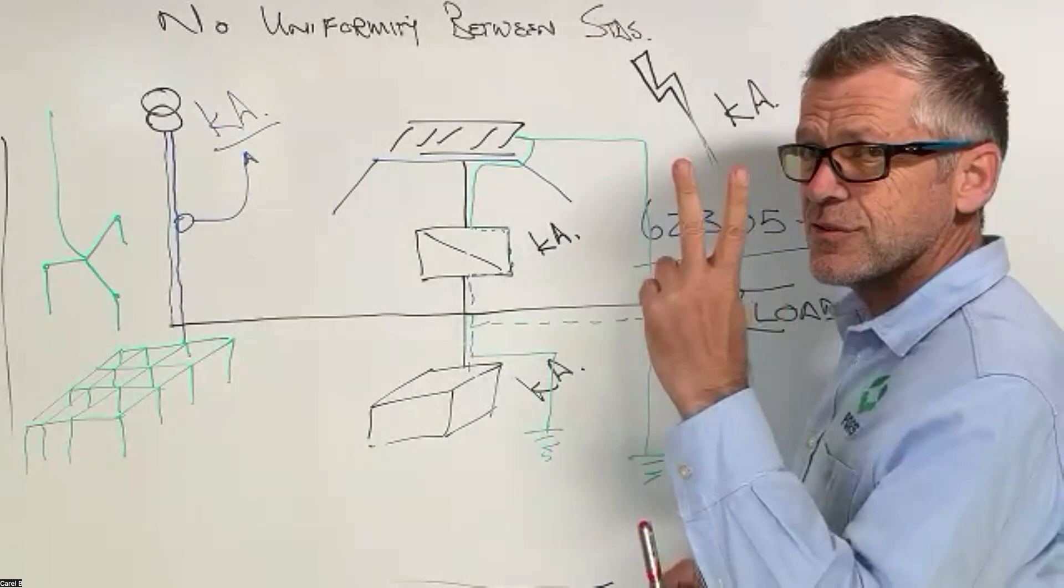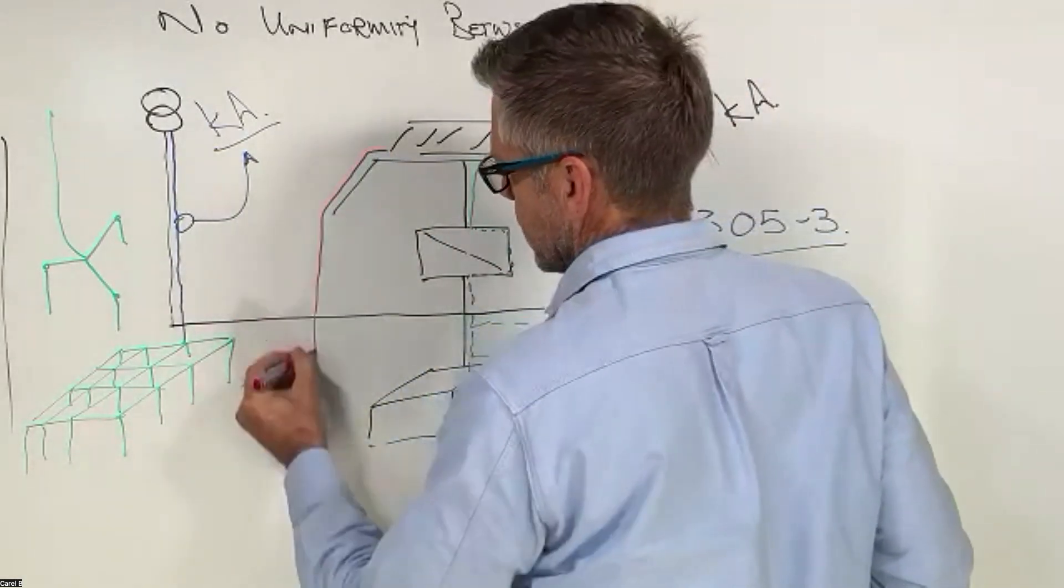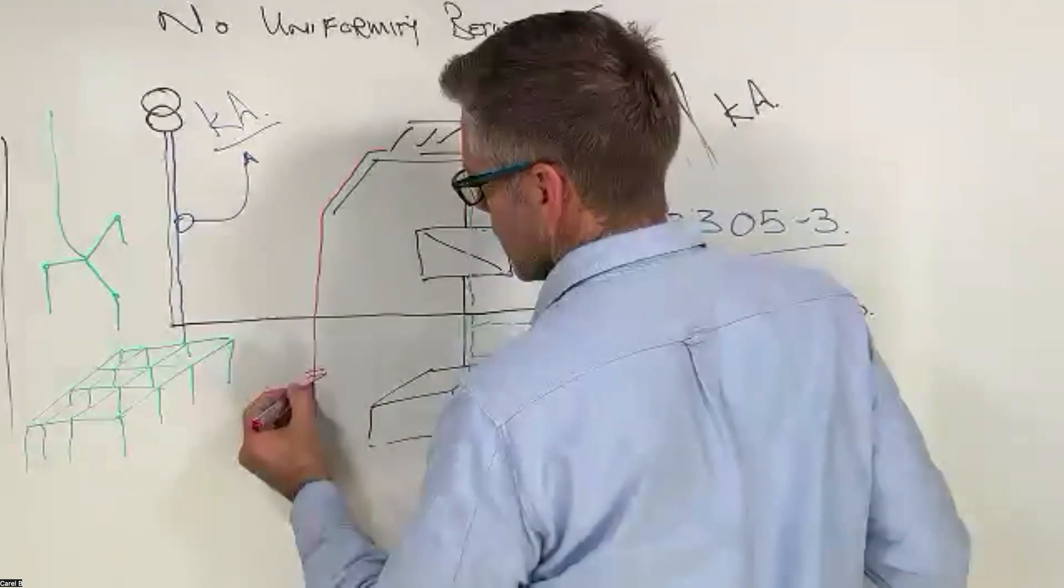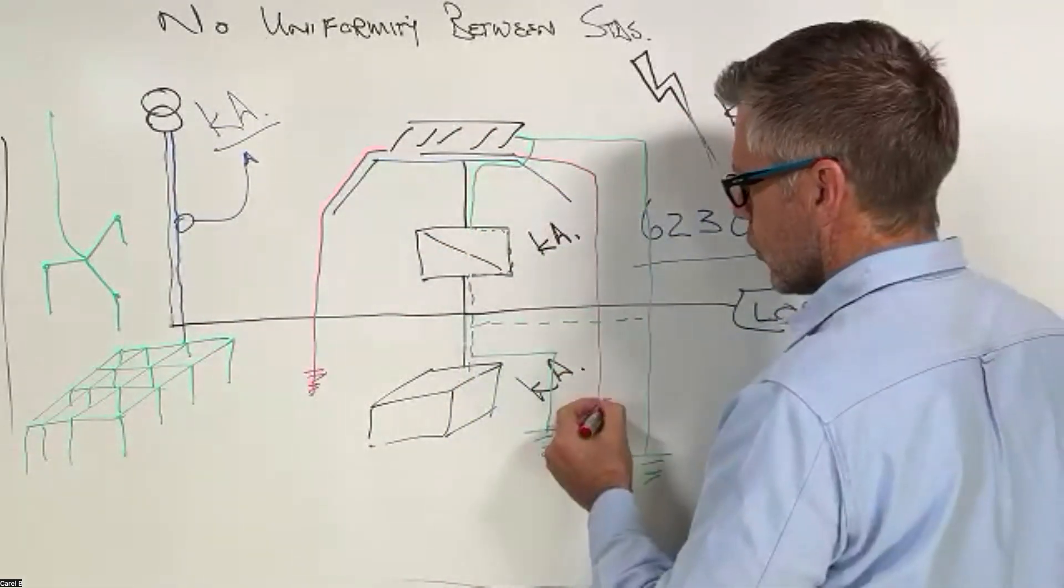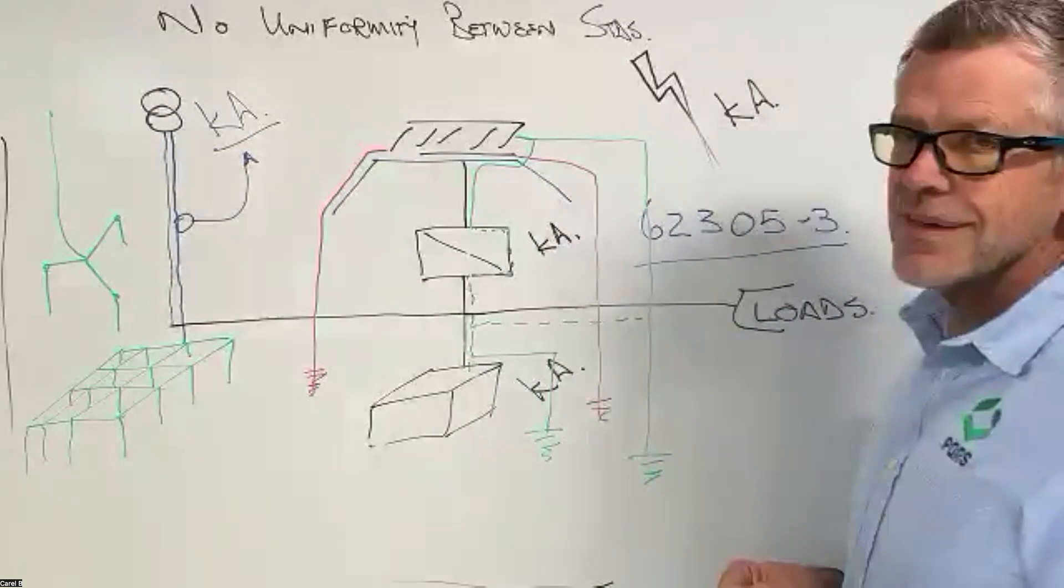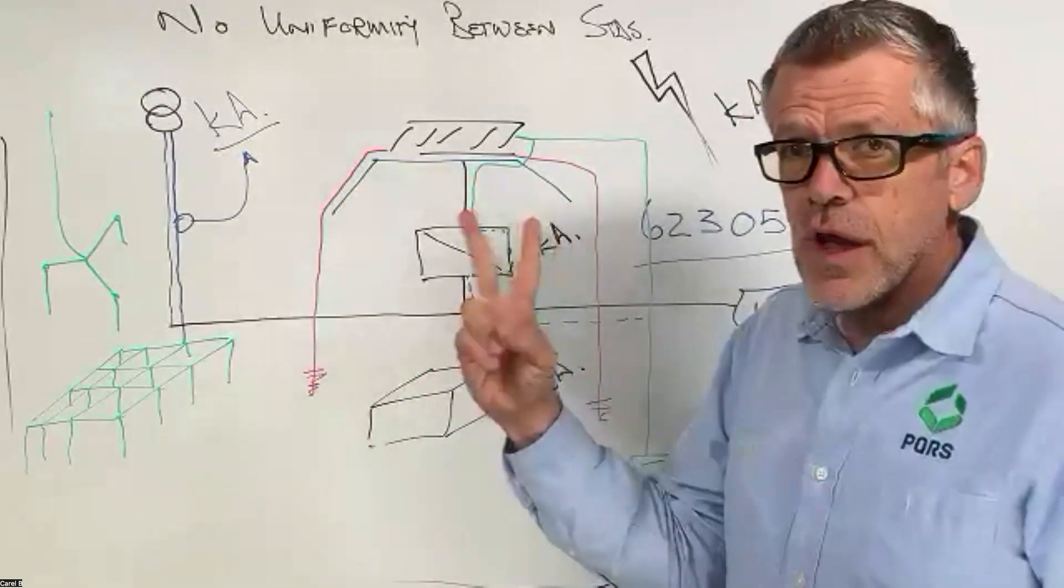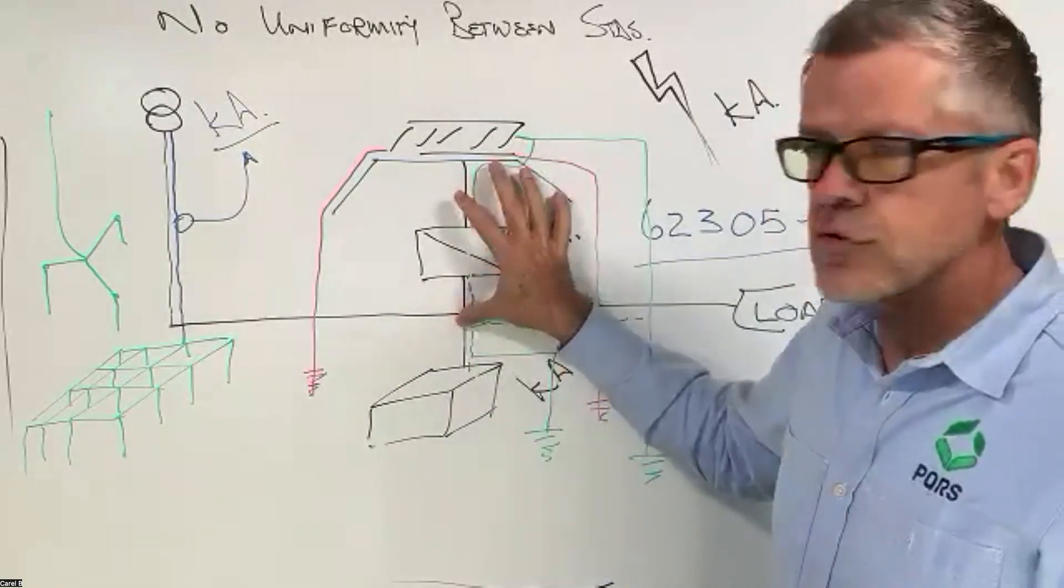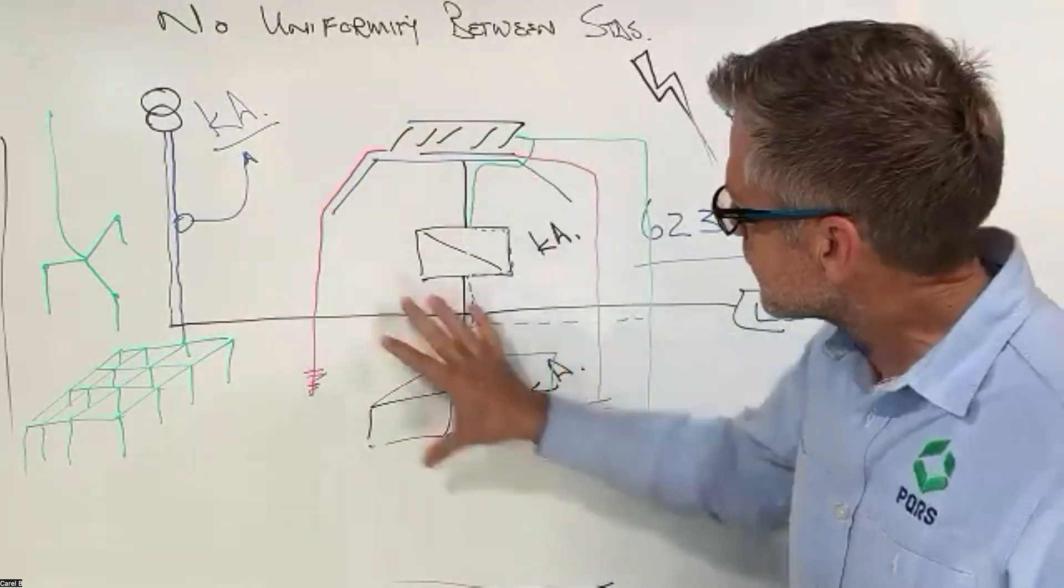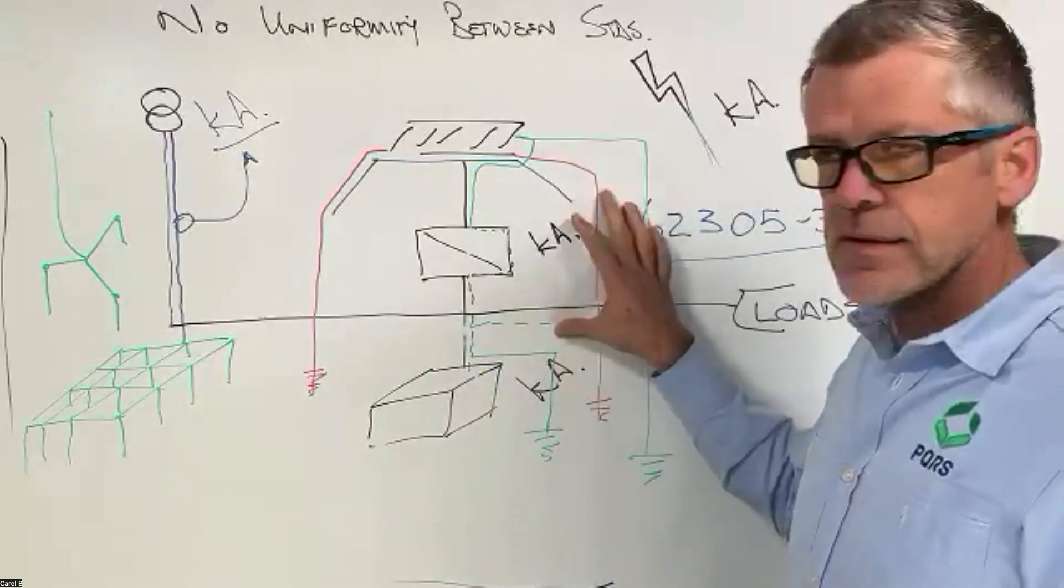Wow guys, this really steps up the game. So that means you now need to change your earthing arrangement because your down conductors, you now need two down conductors. I don't ever hear guys on social media talk about this.